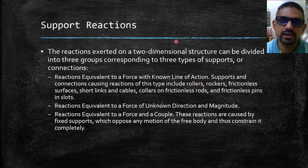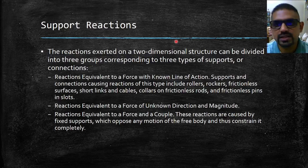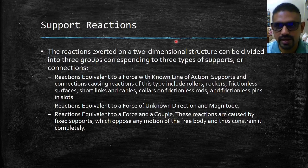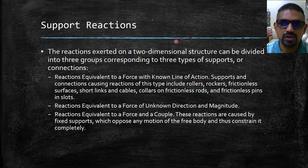The reactions exerted on two-dimensional structures can be divided into three groups corresponding to three types of supports or connections. Number one: reactions equivalent to a force with a known line of action. Supports and connections causing reactions of this type include rollers, rockers, frictionless surfaces, short links and cables, collars on frictionless rods, and frictionless pins in slots.